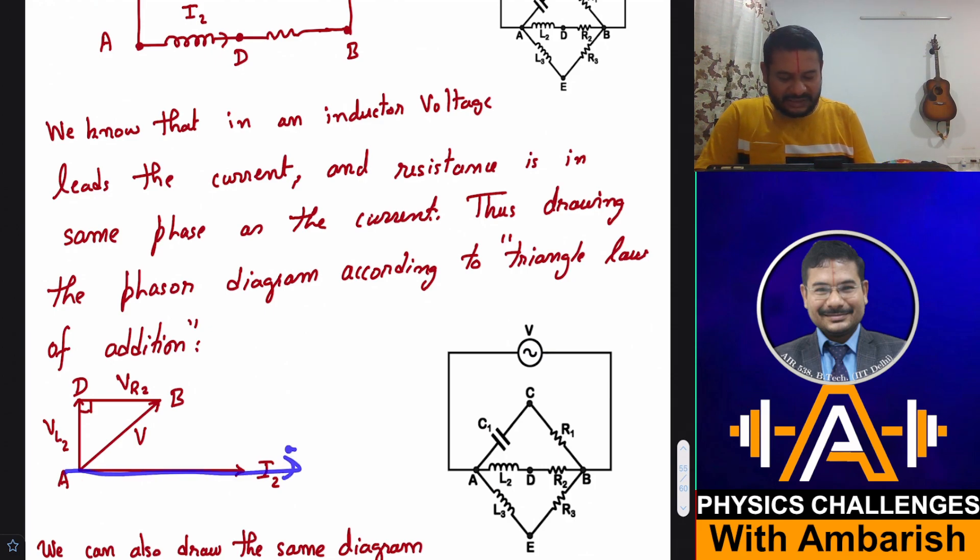Thus drawing the phasor diagram according to the triangle law of addition. Let's say in this branch, current is I2. The inductor voltage is going to lead I2 and the resistor voltage is going to be in the same phase as I2. I'm going to draw it in the triangle of addition form. Phasors behave very much like vectors. So we can add phasors also like triangle law.